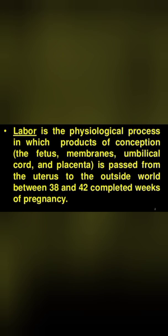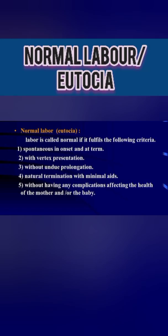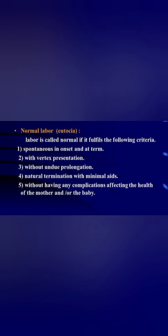Normal labor is also known as eutocia. Labor is called normal if it fulfills the following criteria: the onset should be spontaneous and the baby delivered at term; the baby should have vertex presentation without any undue prolongation; delivery should occur with natural termination with minimal aid; and there should be no complications after birth, with the mother remaining healthy.